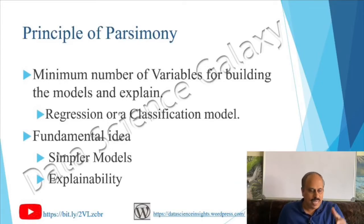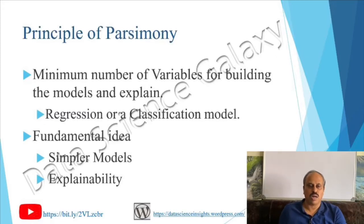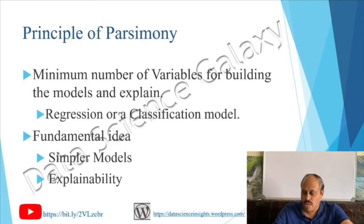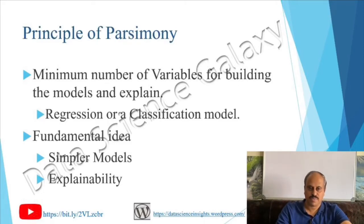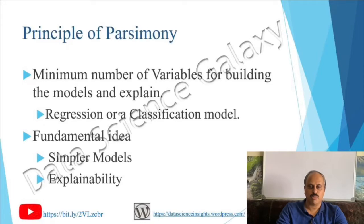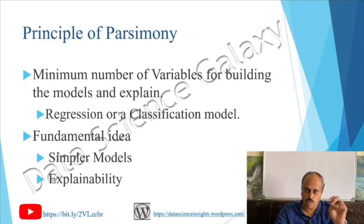You may be building a regression model or a classification model. When building a regression model, take the approach of parsimony — that is, take a small number of important independent variables and build a model for your phenomenon. That phenomenon could be explaining sales and revenue predictions. You could also be building a classification model, for example, predictive models for identifying defaulters and non-defaulters. The fundamental principle is twofold: build simpler models with a minimum number of variables, and enhance the explainability of the models.